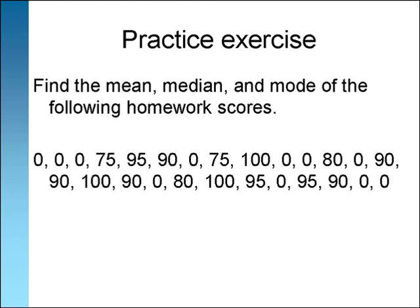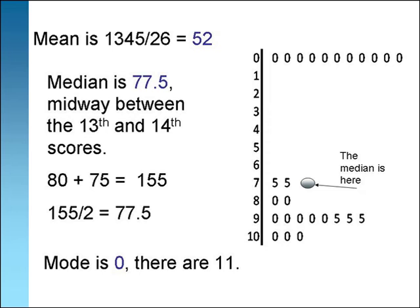Here is one for you to try. Find the mean, median, and mode of this set of 26 scores. Pause the video so you can work. The mean is 52. Since there is an even number of scores, the median falls midway between the 13th and 14th score, between 75 and 80. We add the two scores and divide by 2 to find the middle. The median is 77.5. The mode is 0 this time with a frequency of 11.